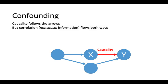We want to detect or measure the relationship between two variables, but there are other variables, other explanations that we might be picking up on and that we might need to control for or get rid of somehow. We all have an intuitive idea of how that works, but causal graphs gives us an explicit way of expressing this problem. The problem is that causality follows causal arrows, but correlation can flow both ways around a causal graph.